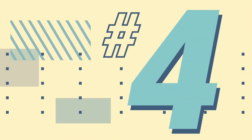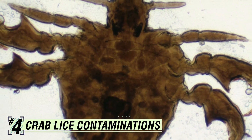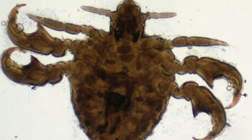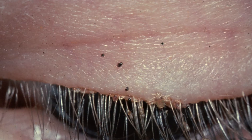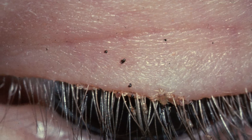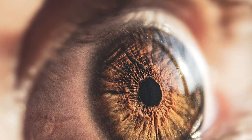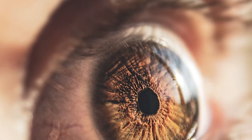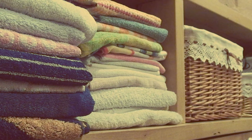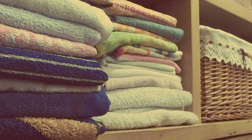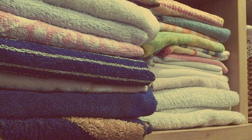Number four: Crab Lice Contaminations. Crab lice, also called pubic lice, are found worldwide. They're small insects that typically colonize the hair of the genital region, but they can be found in other hair areas, including eyelashes. They're usually spread through sexual contact, but contaminated personal items like clothing or towels can also spread them.